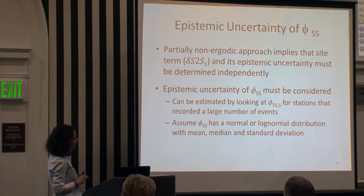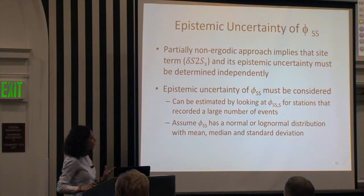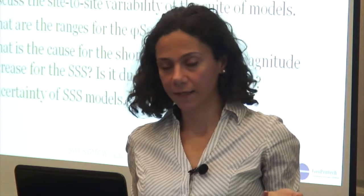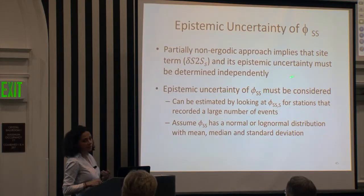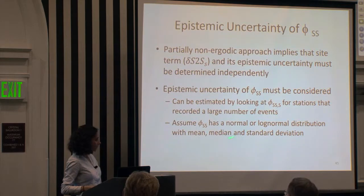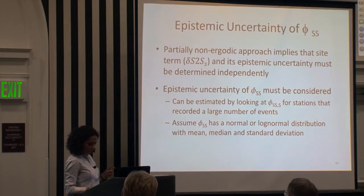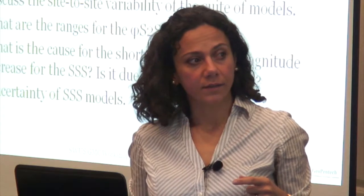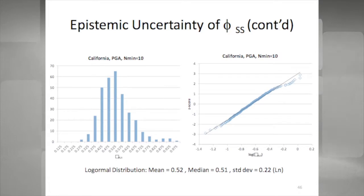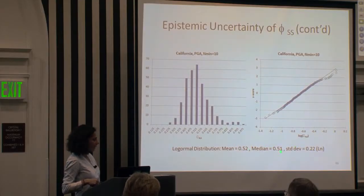For epistemic uncertainty of phi SS: as Norm mentioned, when using the partially non-ergodic approach, the TI team needs to estimate the site-to-site term and also consider epistemic uncertainty around it. Another epistemic uncertainty to consider is around the single-station phi itself. One way to assess this is to look at the single-station phi at every individual station, see the distribution and standard deviation. For California, using a larger number of recordings per station, the distribution of phi SS at each station — assuming log-normal — gives a mean, median, and standard deviation that can inform epistemic uncertainty.